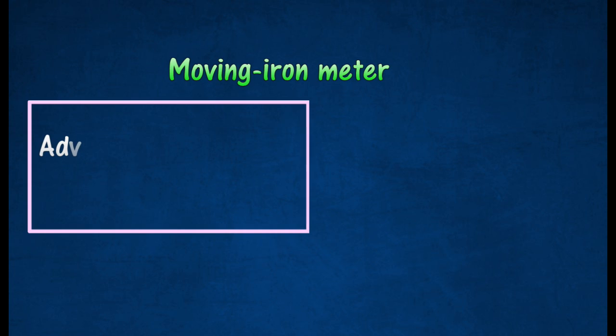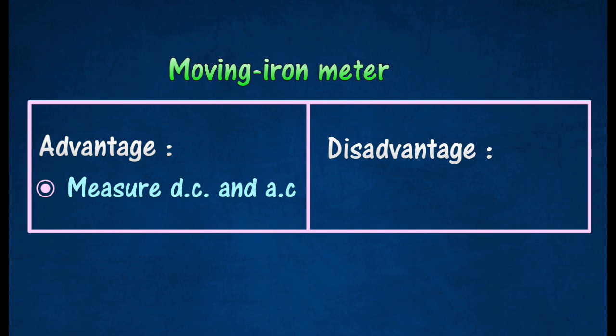The advantage of the moving iron meter is that it can measure both direct current and alternating current. The disadvantage of a moving iron meter is that its scale is not linear.